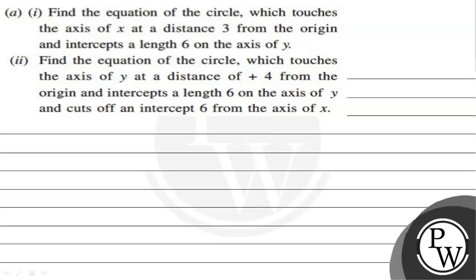Let's read the given question. The first part states: find the equation of the circle which touches the axis of x at a distance from the origin and intercepts a length of 6 on the axis of y. The second part: find the equation of the circle which touches the axis of y at a distance of 4 units from the origin and cuts an intercept of 6 from the axis of x.